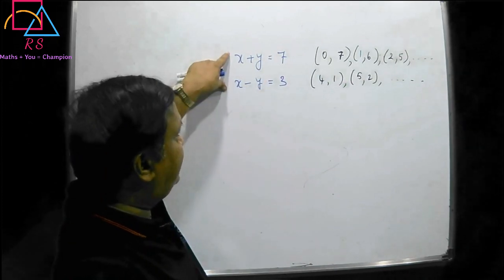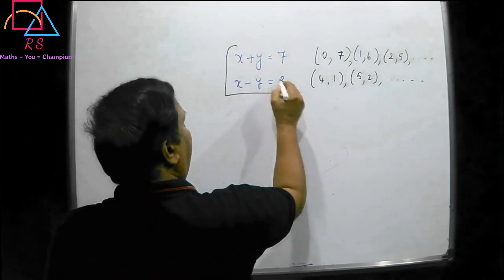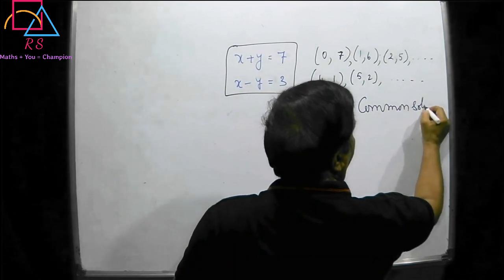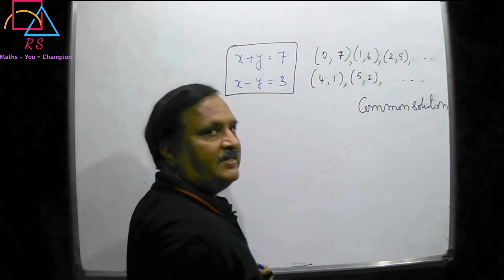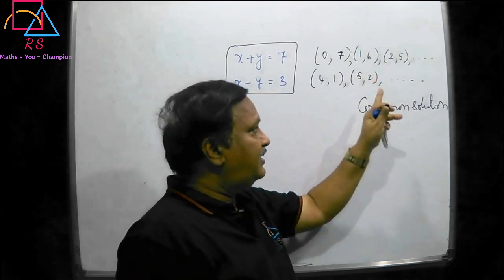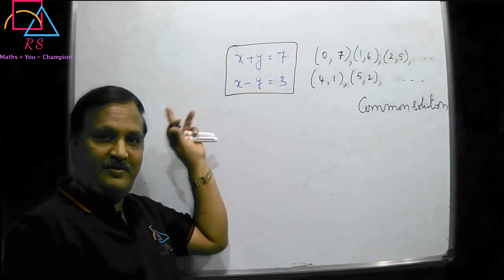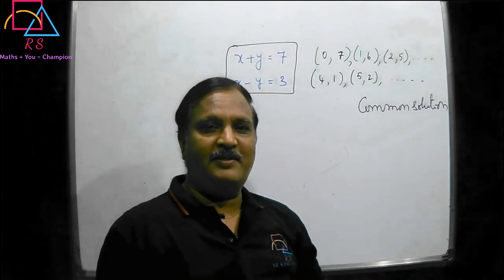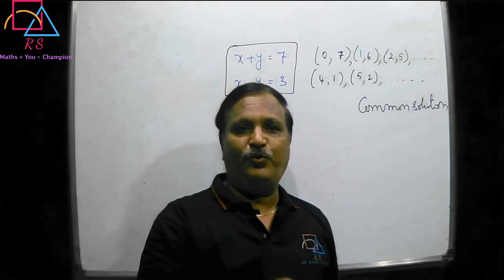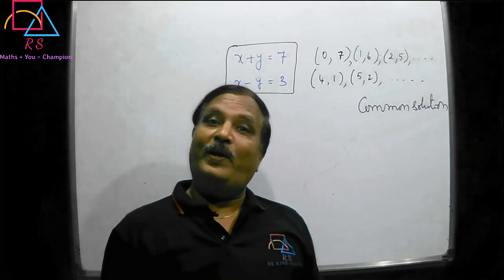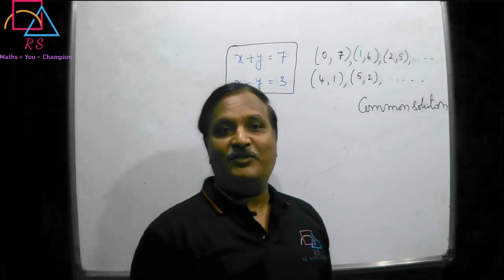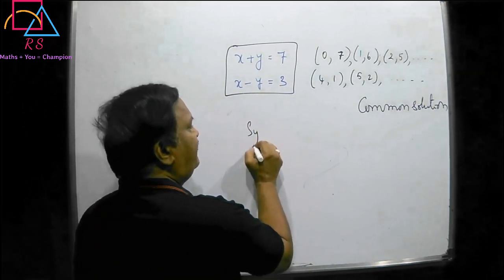So both equations are having infinitely many solutions. In this situation, the common solution will be the solution of these two equations together. Whenever there are two variables and only one equation, you will get infinite solutions, so it is not possible to find a unique solution. That is why whenever there are two variables, there should be two equations to get a unique solution. Those two equations make a system of linear equations.